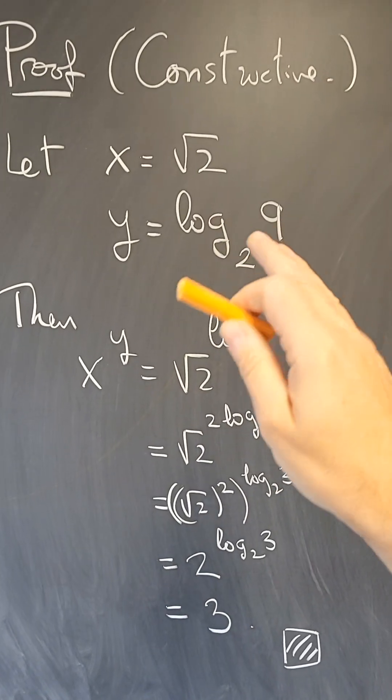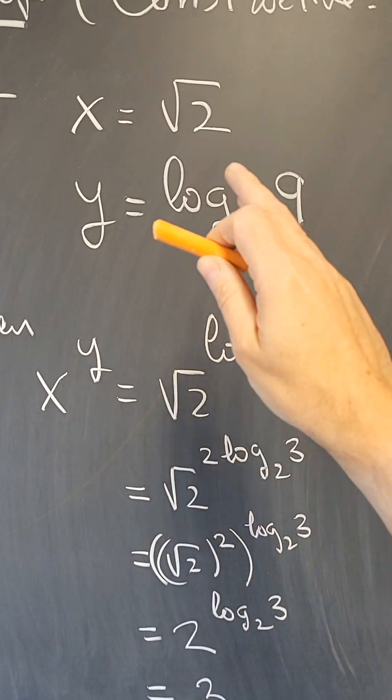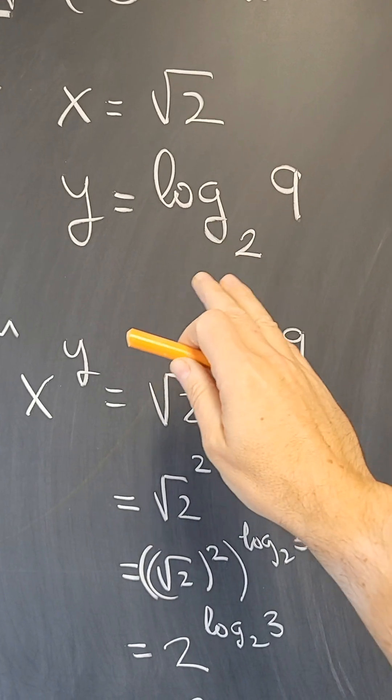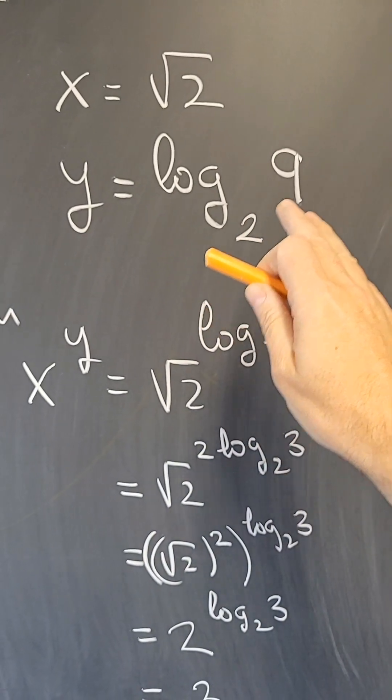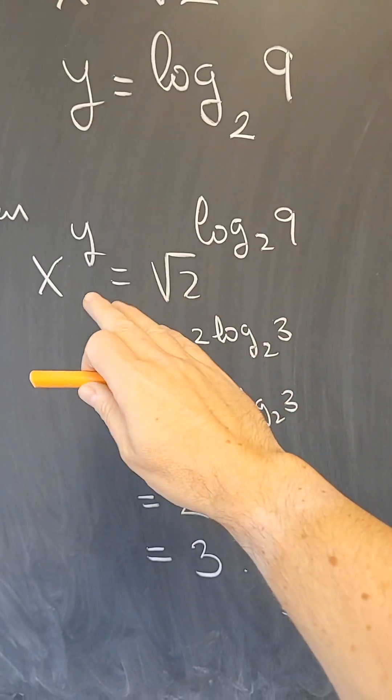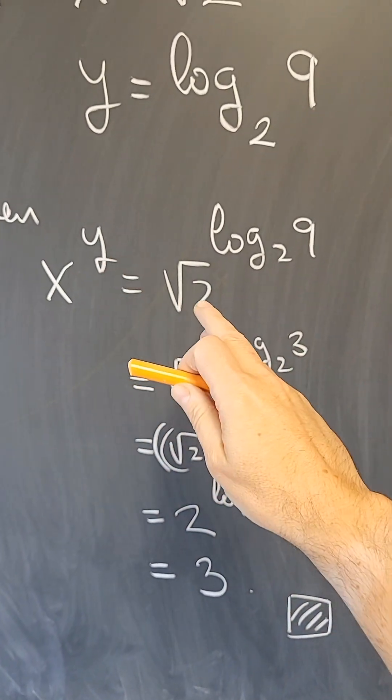a different proof, which is constructive and actually much simpler, is to take x to be a square root of 2 and y to be the logarithm in base 2 of 9.